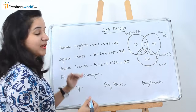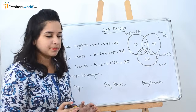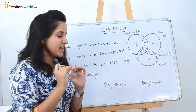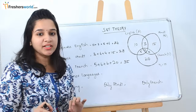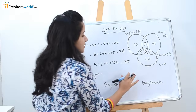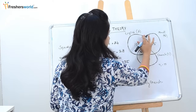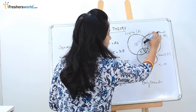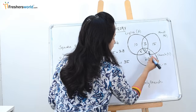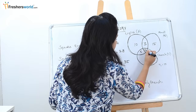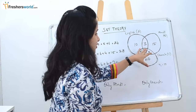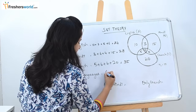So the first three questions are very simple — they are just asking the number of people speaking English, Hindi and French. The next question they are asking is the number of people speaking all three languages. If you see the middle intersection of the three circles, it talks about the people who speak all three languages. So the answer for this question is 6.